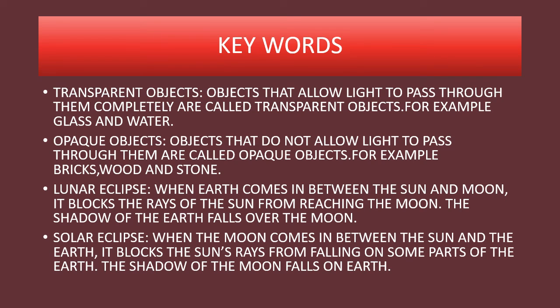Children, with this we complete the eclipse part of the lesson. What you have to do — practice drawing the diagrams of solar eclipse and lunar eclipse. Take an A4 size sheet, draw it, color it, take a pic and post it in your group. We have completed the entire lesson of Our Earth and the Moon. Try to read the lesson and do the book back exercises. Thank you.